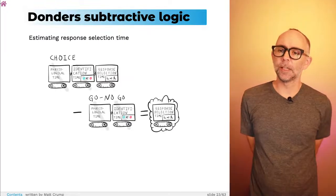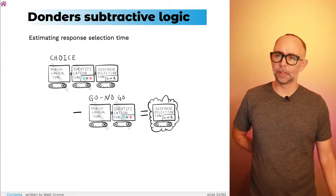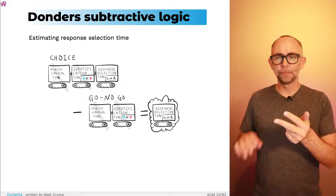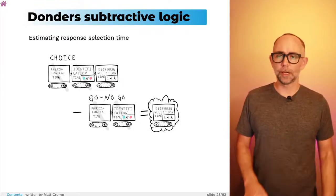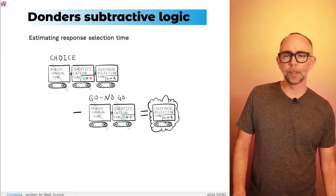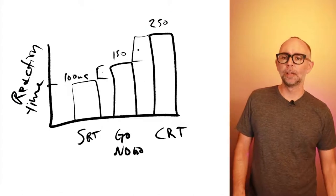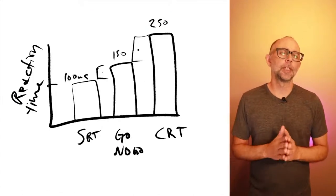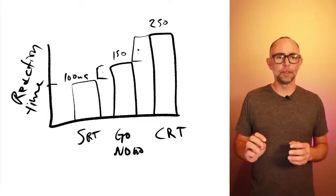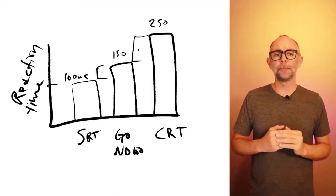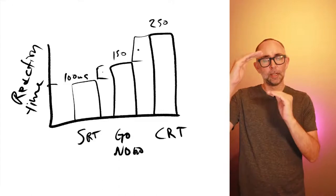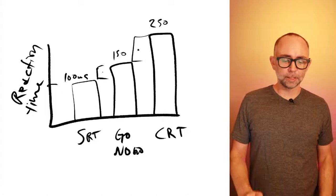Similarly, to estimate response selection time, we take the choice reaction time task — which involves physiological time plus identification time plus response selection time — and subtract go/no-go performance, which involves physiological time and identification time. Those terms cancel out, leaving an estimate of response selection time. For example, if choice RT was 250 ms and go/no-go was 150 ms, that's a difference of 100 ms — meaning it took 100 milliseconds to make a choice between responses, linked to the response selection stage of processing.